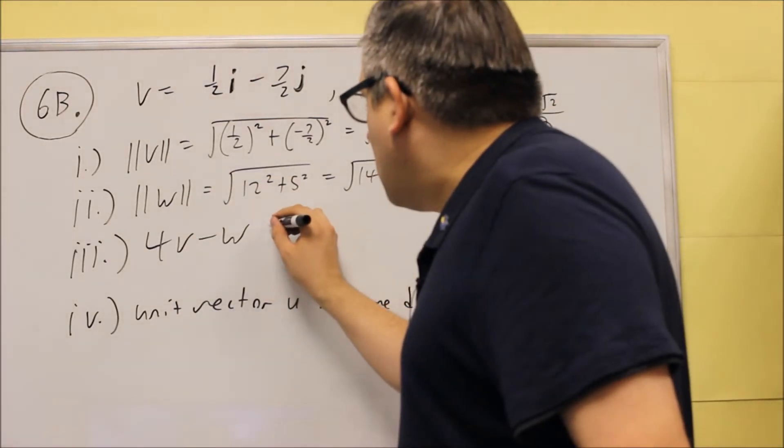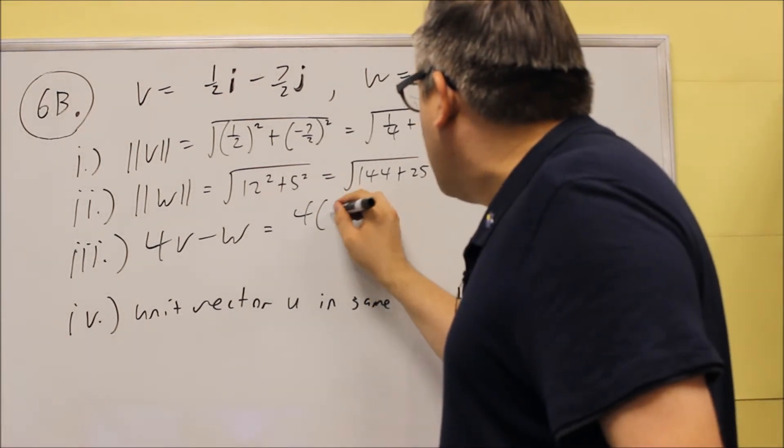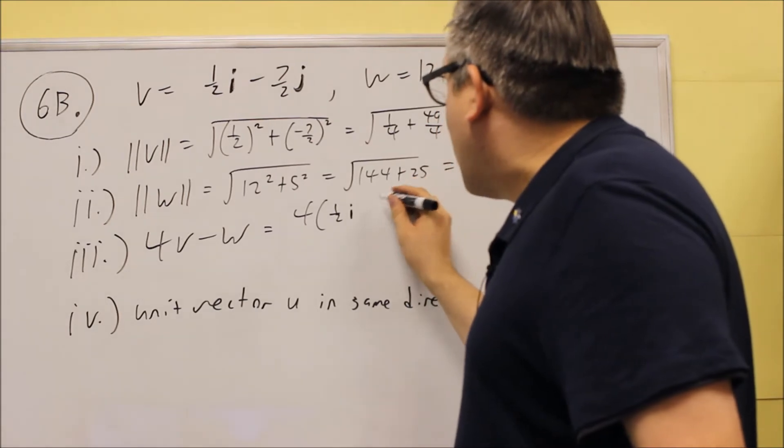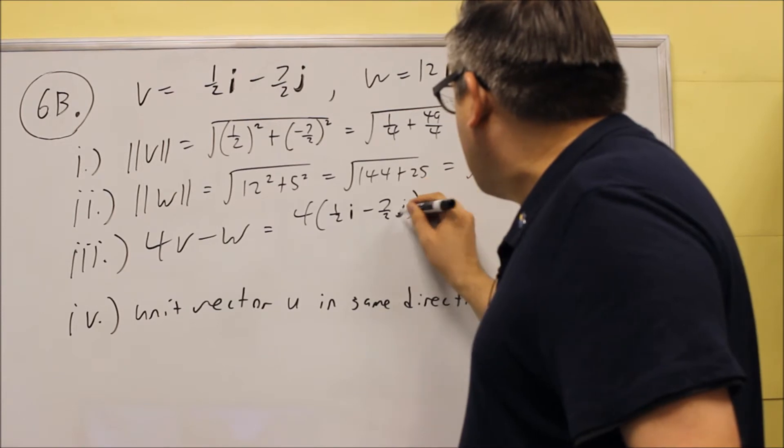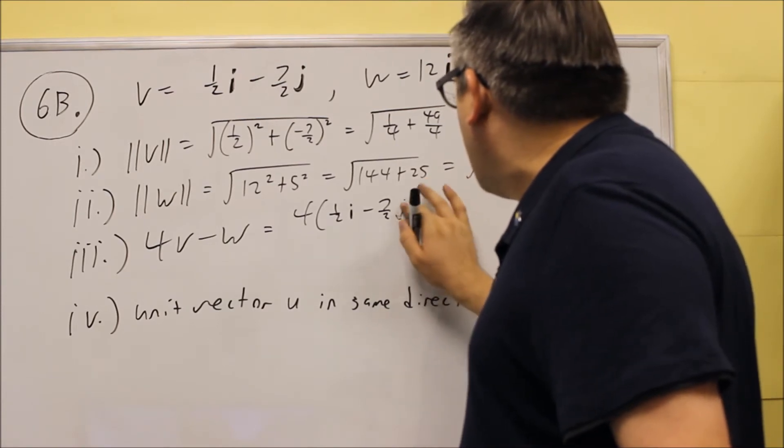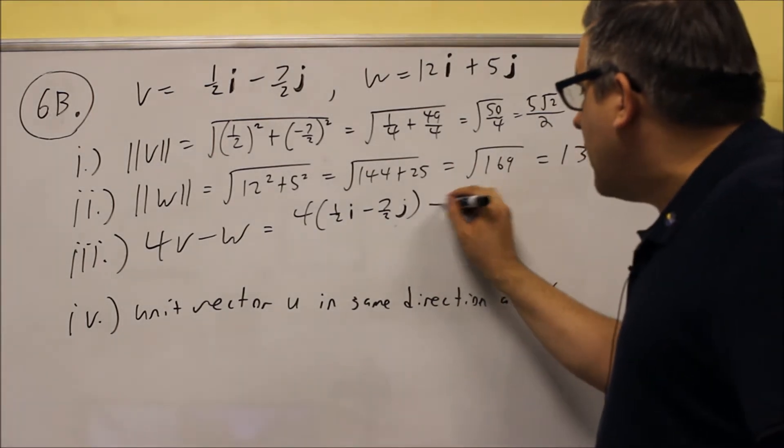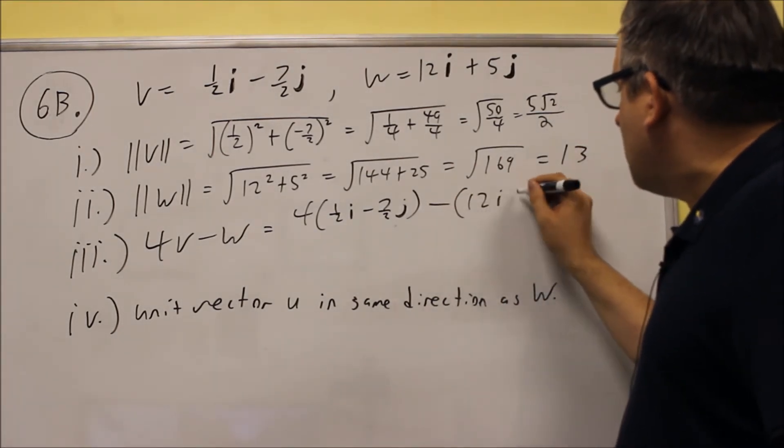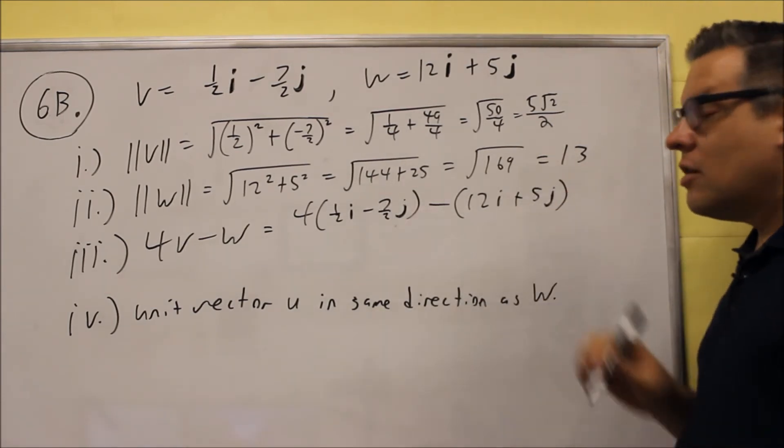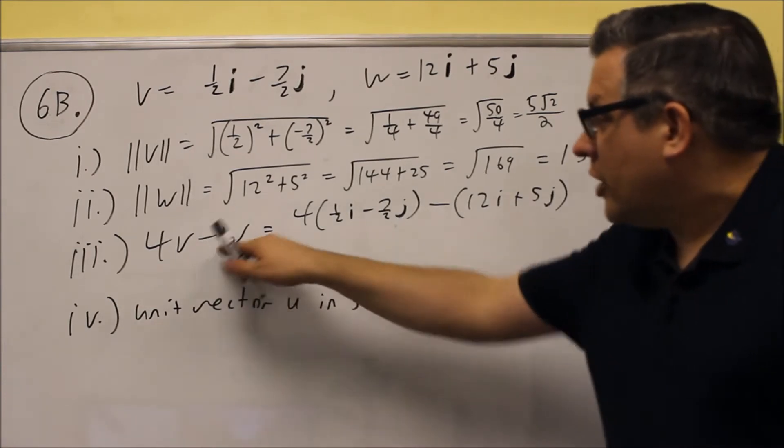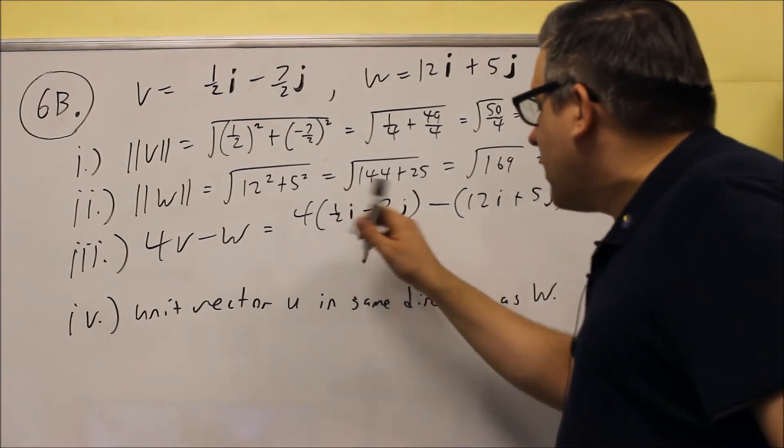For this, we're going to do 4V minus W. You're going to do 4 times, we're just going to put in the vector here, 1 half I minus 7 halves J. We'll go inside there, try to make a bold J here. And then we have a minus W, so minus 12I plus 5J. So you just substitute, take out the letters, replace them with the I and J notation that goes with that, and then we're going to multiply through.